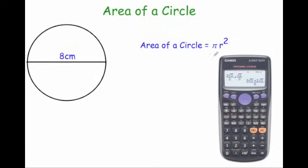Let's have a look at another question. So this time we've got a circle, and this time the diameter of the circle is 8 centimeters. So area equals pi r squared. So the area will equal pi times the radius.